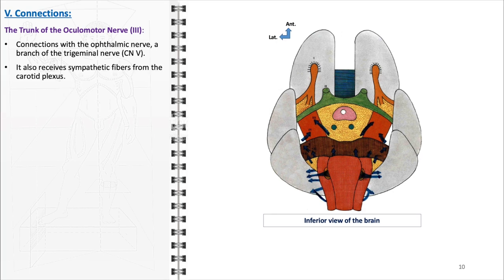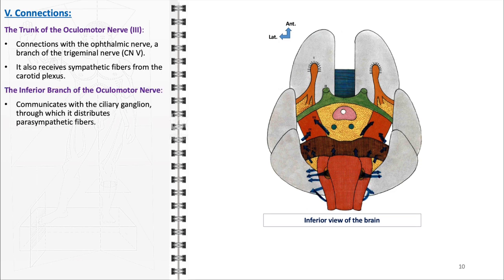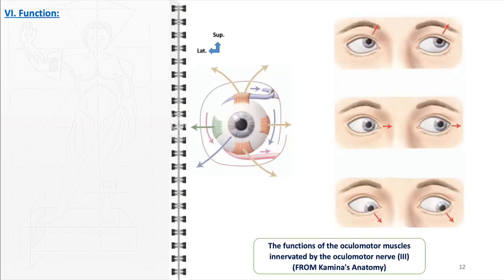Additionally, the oculomotor nerve trunk receives sympathetic fibers from the carotid plexus. These sympathetic fibers are crucial for maintaining the tone of certain eye muscles and contribute to the regulation of pupil size. The integration of sympathetic innervation helps modulate ocular responses under different light conditions and during emotional or physiological stress, ensuring appropriate pupillary dilation and aiding in the fight-or-flight response. The inferior branch of the oculomotor nerve has a vital connection with the ciliary ganglion, a small parasympathetic ganglion located in the orbit. Through this connection, it distributes parasympathetic fibers that control the ciliary muscle and the sphincter pupillary muscle, ensuring that the eye can quickly adjust to different visual demands.